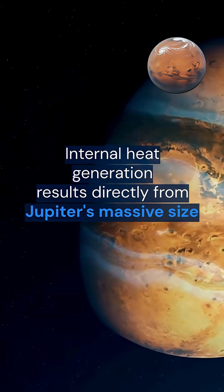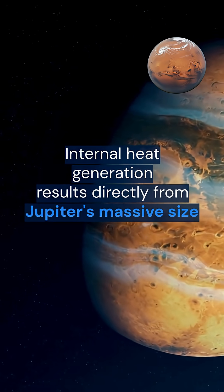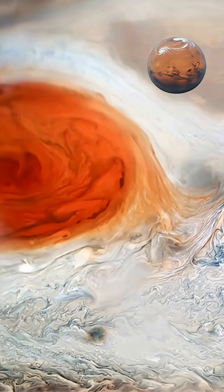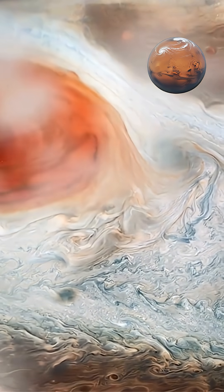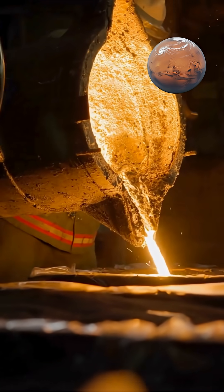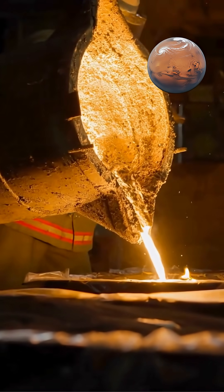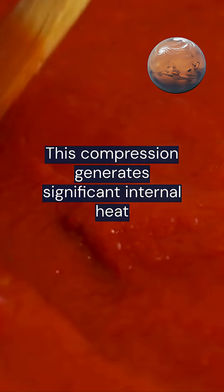Internal heat generation results directly from Jupiter's massive size. The planet's tremendous gravitational compression creates pressures so intense that hydrogen in the deep interior behaves like liquid metal. This compression generates significant internal heat.